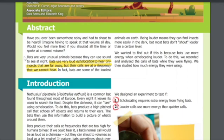Bats are very unusual animals because they can use sound to see at night. Bats use very loud echolocation to hear tiny insects that are far away, but their calls are at a frequency that we cannot hear. In fact, bats are some of the loudest animals on earth. Being louder means they can find insects more easily in the dark.